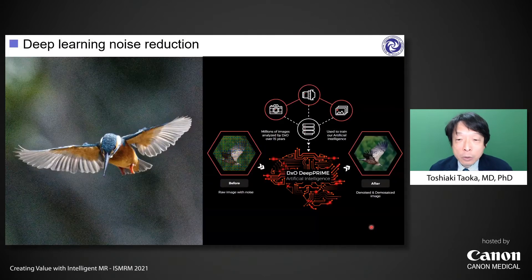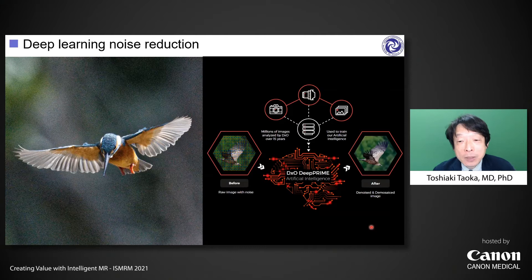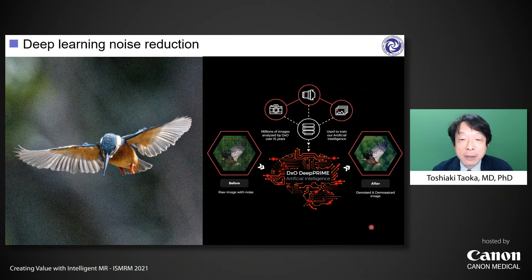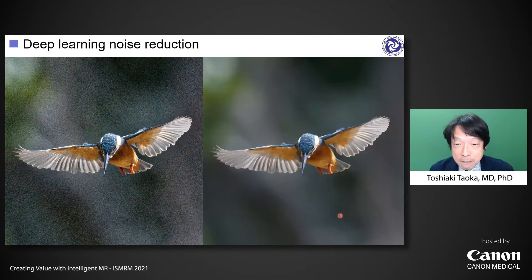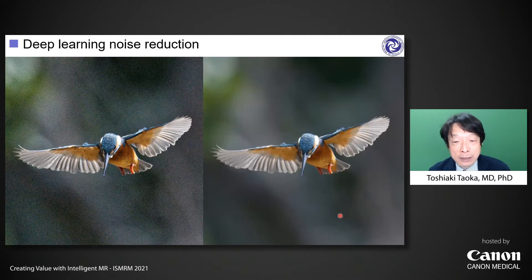This is the original image I took with a small lens. As you can see, it's a noisy photograph. However, by applying a deep learning noise reduction system, which is commercially available for as much as $100, this noisy photo comes to a clear and beautiful image. The same story will happen in medical images.